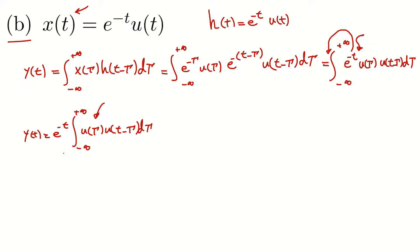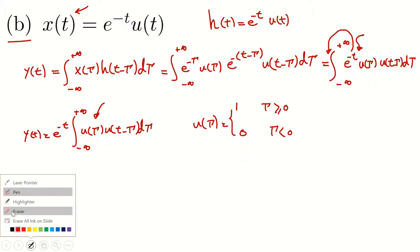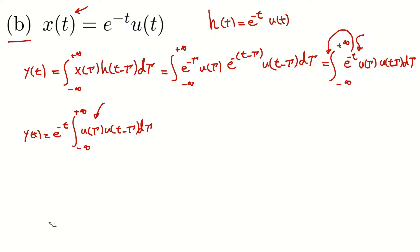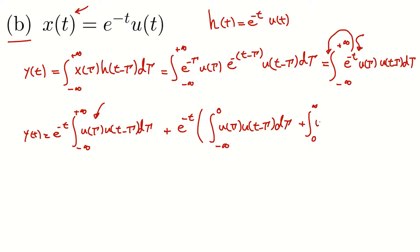Now, u(τ) is a unit step function: it equals 1 if τ ≥ 0, and zero if τ < 0. Replacing that, I can write this integral as the sum of two integrals: one from minus infinity to zero of u(τ) · u(t - τ) dτ, and a second from zero to infinity of u(τ) · u(t - τ) dτ.